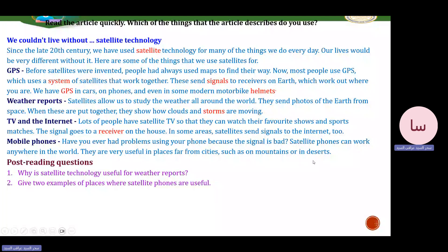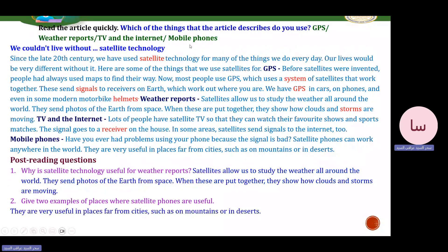Let's check the comprehension questions. Why is satellite technology useful for weather reports? Satellites allow us to study the weather all around the world — they send photos of the Earth from space, and when put together, they show how clouds and storms are moving. Give two examples of places where satellite phones are useful: they are useful in places far outside cities, such as mountains or deserts.